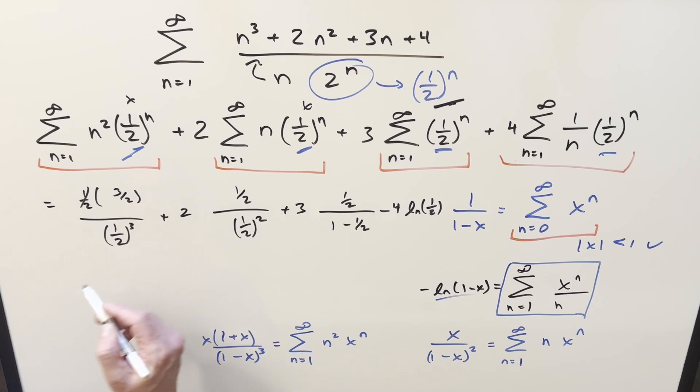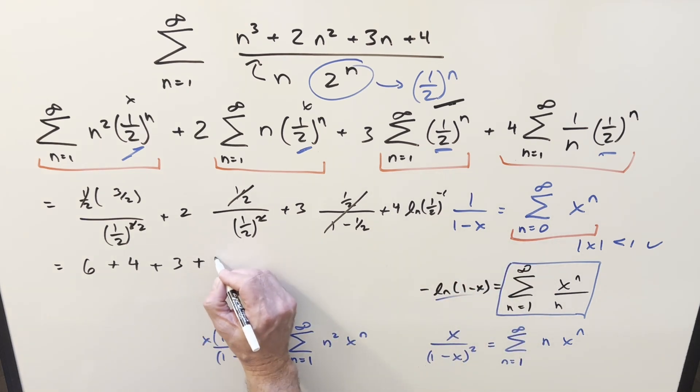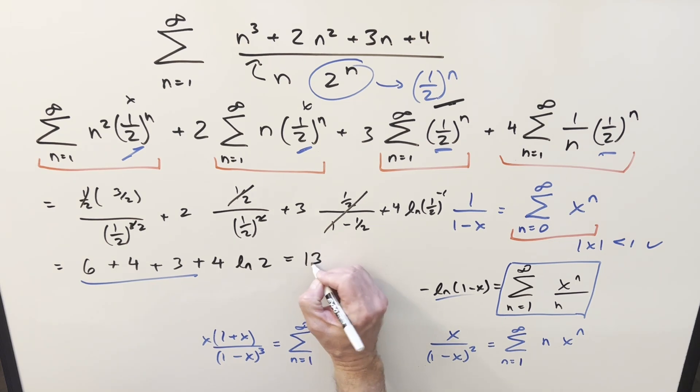And then we just need to simplify so I can cancel a half with a half here. Half squared is a fourth. Flip it. 4 times 3 halves is going to be 6. Here, cancel a half with one of these. Flip this and we get 2 times 2. This is going to be a 4. Here, this denominator is a 1 half. So 1 half over 1 half, this is all 1. And we just have a 3 on this here. Then here, I can take this minus and bring it into the exponent and write this as half to the minus 1 or just 2. So then this is going to become just 4 ln 2. So for my final solution, we just have 13 plus 4 ln 2. And that's it.